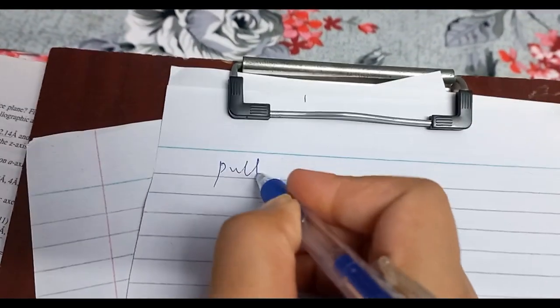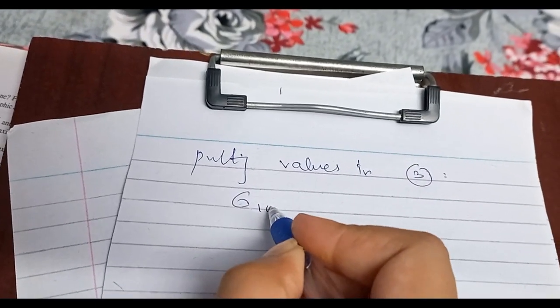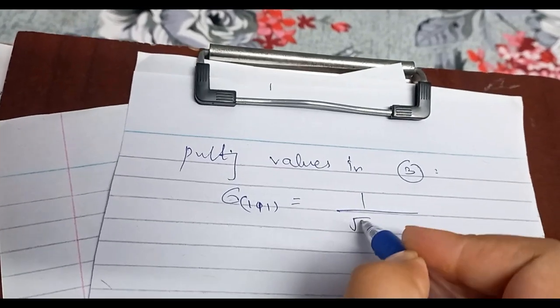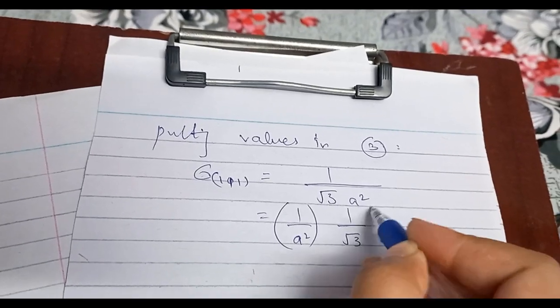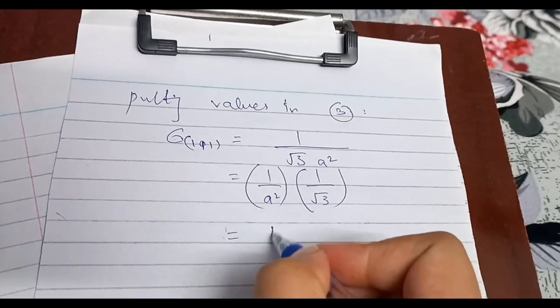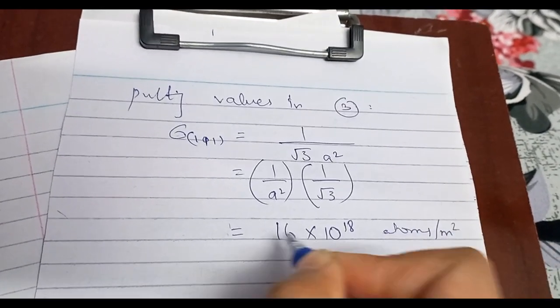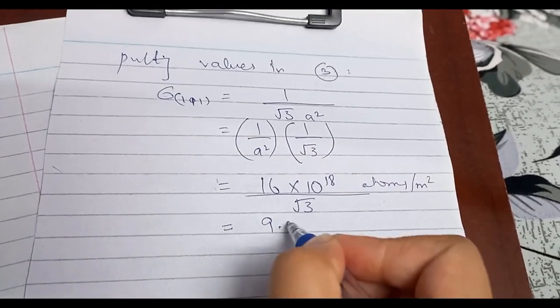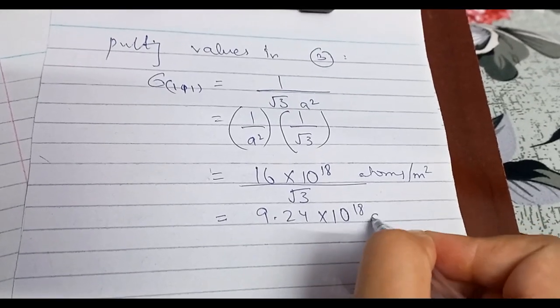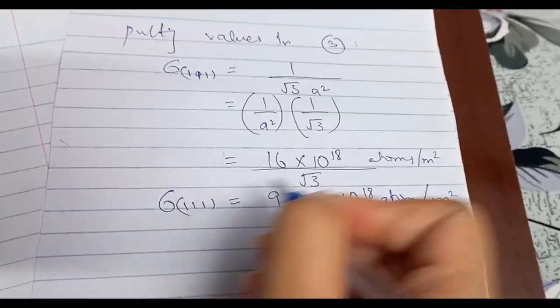Putting values into expression three: σ₁₁₁ = 1/(√3 · a²). This equals (1/a²) × (1/√3) = 16 × 10¹⁸ divided by √3, which gives 9.24 × 10¹⁸ atoms per meter squared. This is the planar density for the 111 plane in the BCC structure.